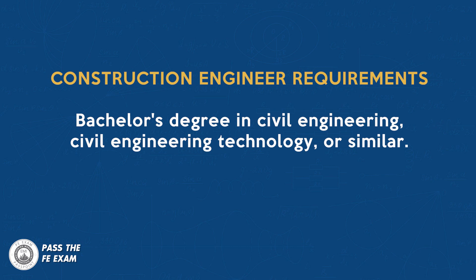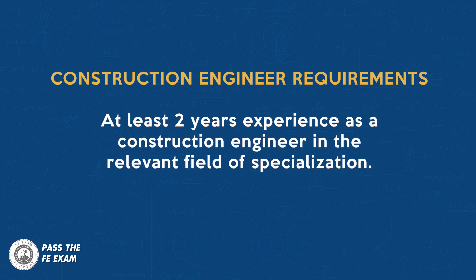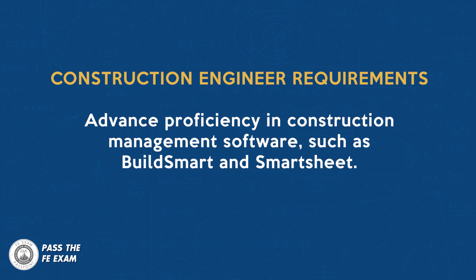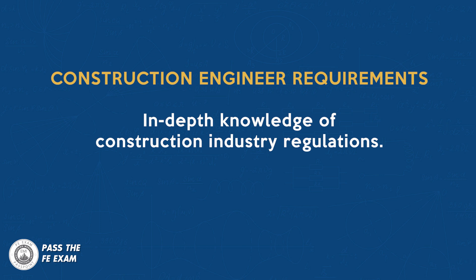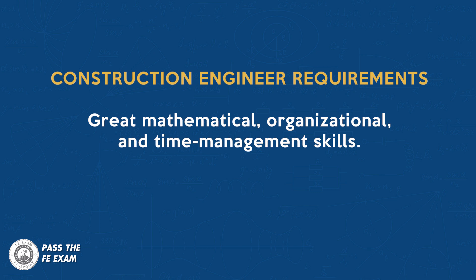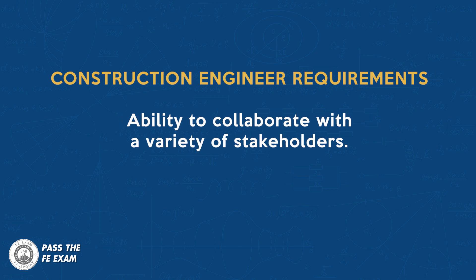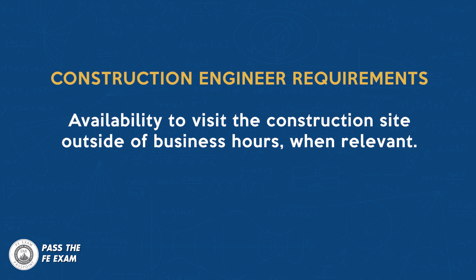Let's look at the credentials that can help you become a construction engineer. You'll need a bachelor's degree in civil engineering, civil engineering technology, or something similar; a state-approved license; and at least two years of experience as a construction engineer in a relevant specialization. Advanced proficiency in construction management software — such as BuildSmart or Smartsheet — is important, along with in-depth knowledge of construction industry regulations. You'll also need exceptional leadership, project management, decision-making, and problem-solving skills; great mathematical, organizational, and time management skills; excellent written and verbal communication skills; the ability to collaborate with a variety of stakeholders; and availability to visit construction sites, sometimes outside of business hours.